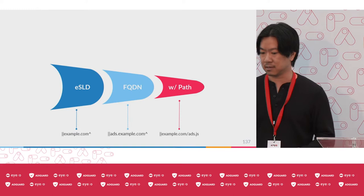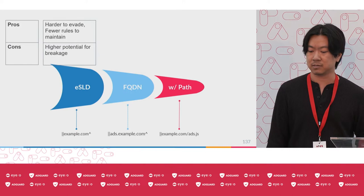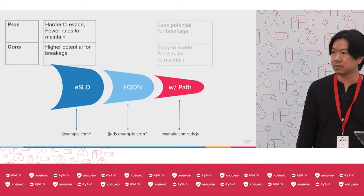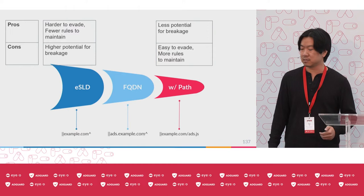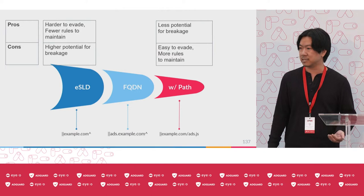Each one of these rules has pros and cons. For ESLD rules, they can be hard to evade, and that also means fewer rules to maintain because of their granularity. But for the cons, they have a much higher potential for breakage because they can overblock. On the other extreme, rules with paths have less potential for breakage because they're targeting a very specific resource to block. But in terms of cons, they're very easily evaded — an adversary can just change the path to evade that rule, and it can also cause more rules to maintain for filter list authors.